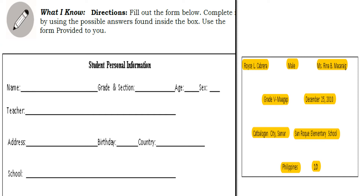If we're going to answer it, the student's name is Royce L. Cabrera. The grade and section is Grade 5 Maagap. How old is Royce L. Cabrera? He is 10 years old. His sex is male. The teacher of Royce L. Cabrera is Miss Rina B. Macaraig. The address of Royce is Kat Balogan City, Samar. His birthday is December 25, 2010. Country is the Philippines. And school is San Roque Elementary School.